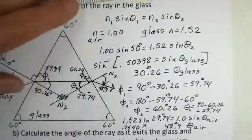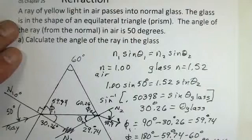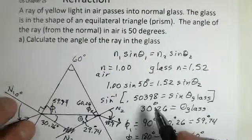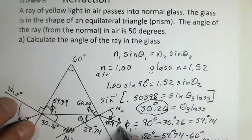So read the directions just do the part of the problem that you're supposed to do part A calculate the angle of the ray in the glass so we worked that out 30.26 and then all of this relates to part B.